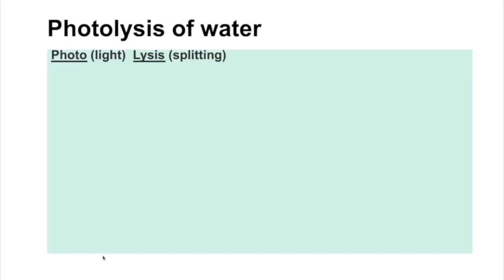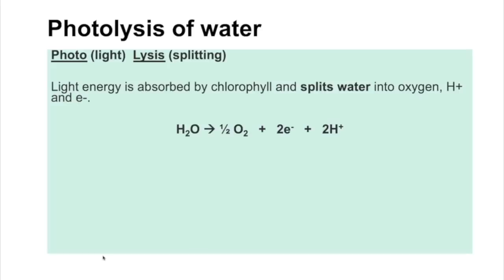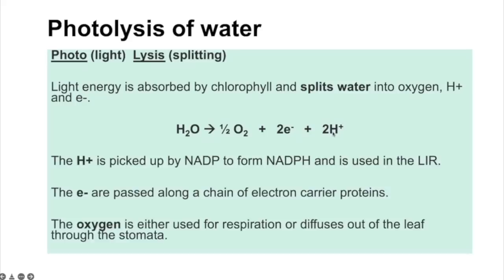Starting with photolysis: photo means light, lysis means splitting. So photolysis of water means light energy is absorbed and splits water into oxygen, electrons, and protons which are hydrogen ions. The protons are picked up by NADP to form reduced NADP, which is used in the light independent reaction. The electrons are passed along a chain of electron carriers. The oxygen is either used in respiration or, if not needed, it diffuses out through the stomata.